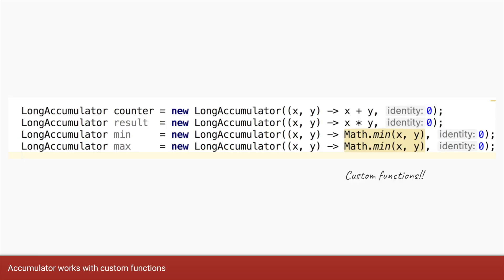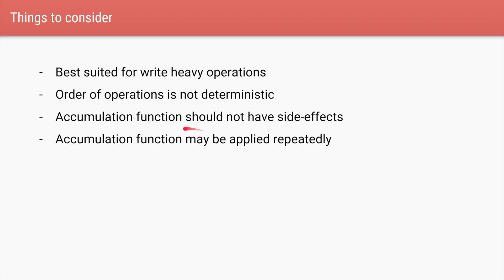The beauty of Accumulator is you're not limited to addition — you can apply any operation on two variables, such as multiplication, Math.min, or Math.max. Accumulator works like Adder but accepts custom functions. There are caveats based on how it works internally: the most important is that the accumulating function should not have any side effects. It should not have its own state or change external variables, because internally the function can be called repeatedly — any state changes or external variable modifications could be applied multiple times, leading to corrupt data.